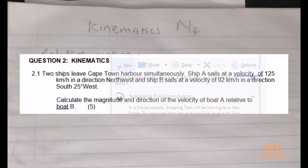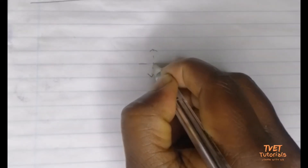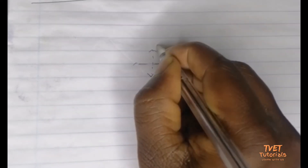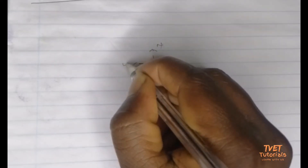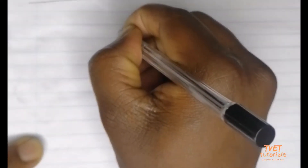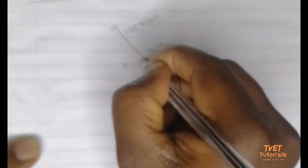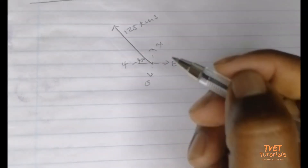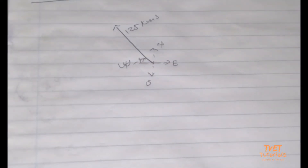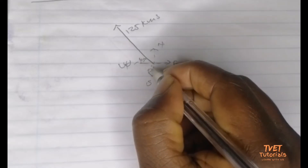From this information we're going to draw our sketch — our vector diagram — from a Cartesian plane. I'm just going to create a small Cartesian plane so we can have the directions: north, east, south, and west. We are given the velocity of the first boat as 125 kilometers per hour at 45 degrees since it is northwest, and the other boat is at 25 degrees south — 92 kilometers per hour west.